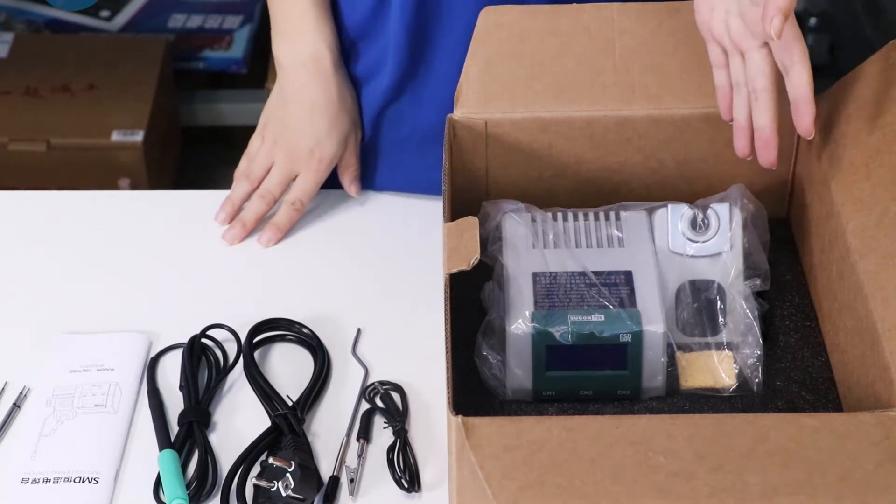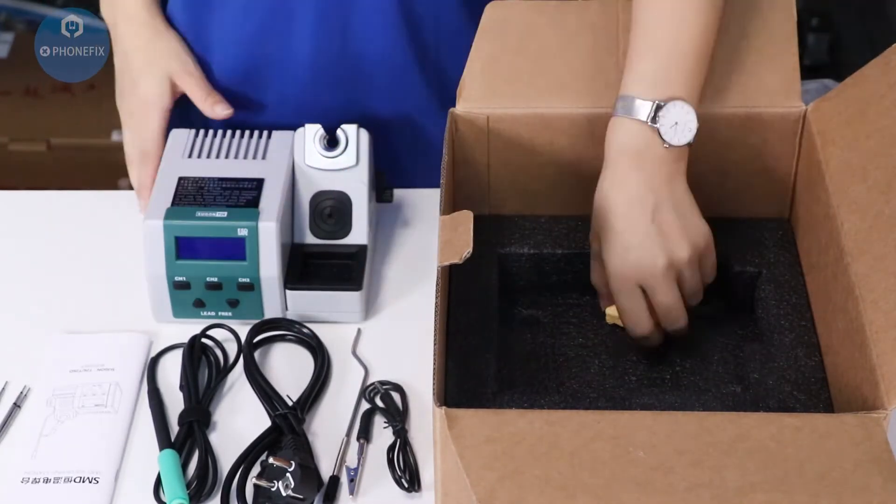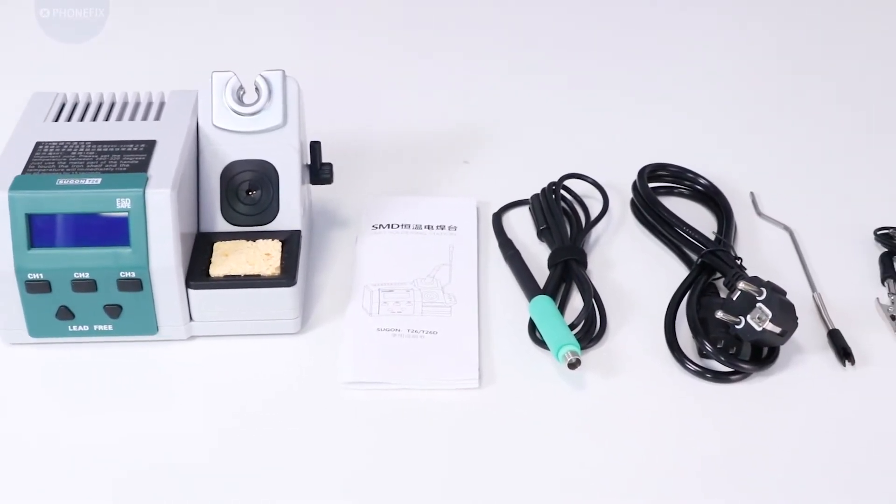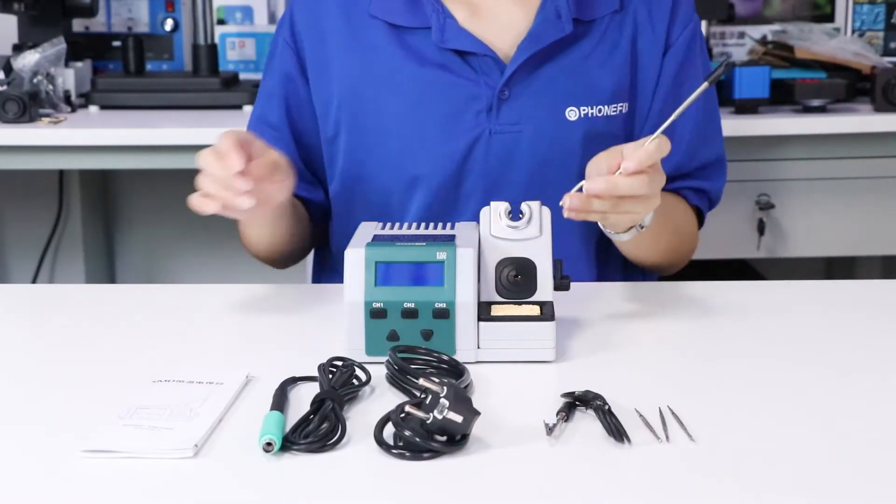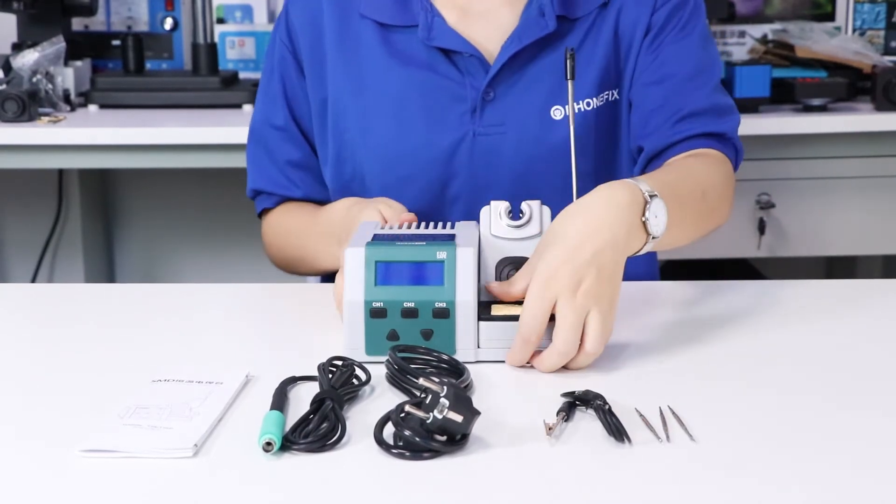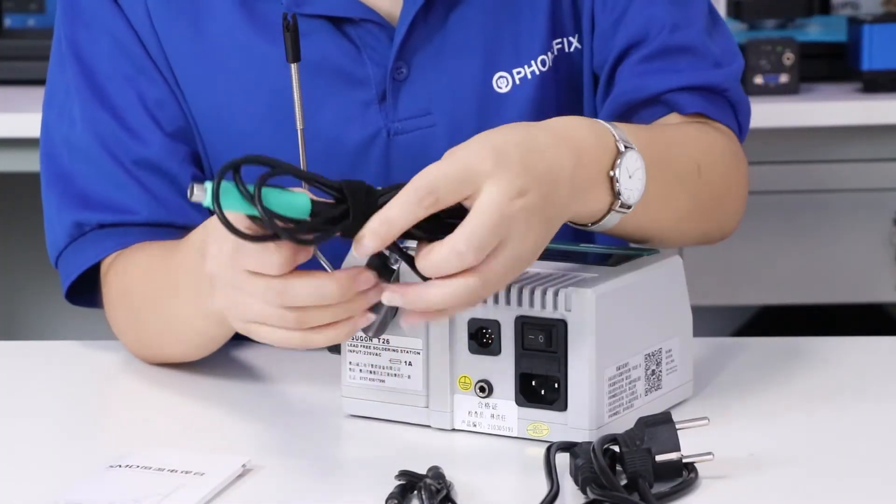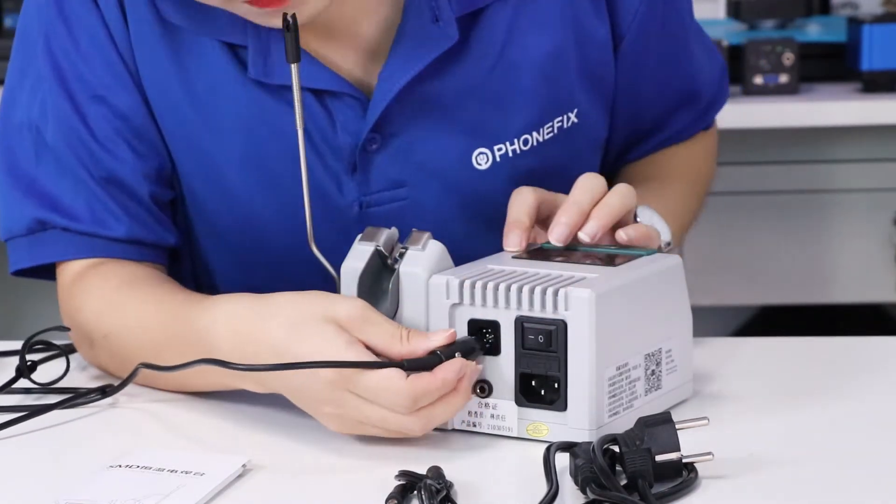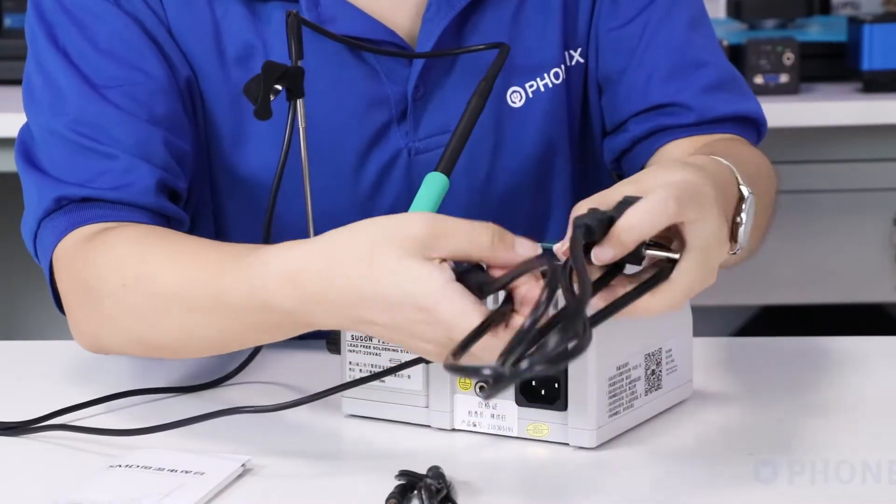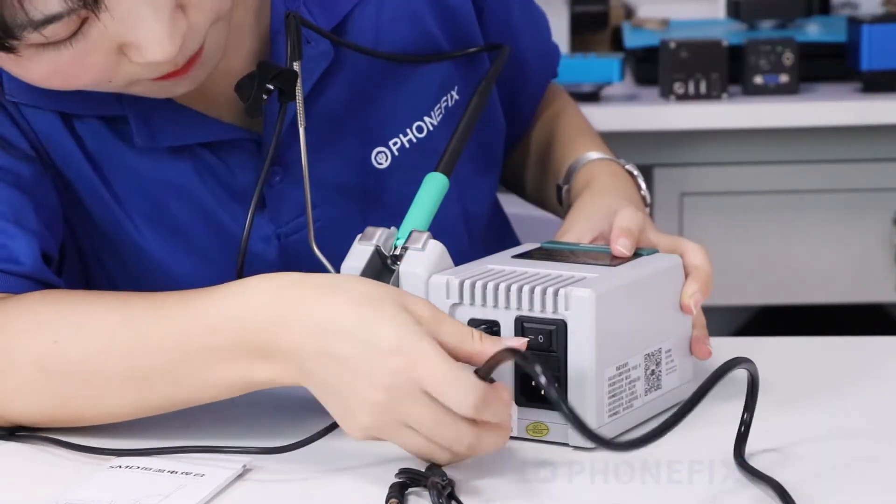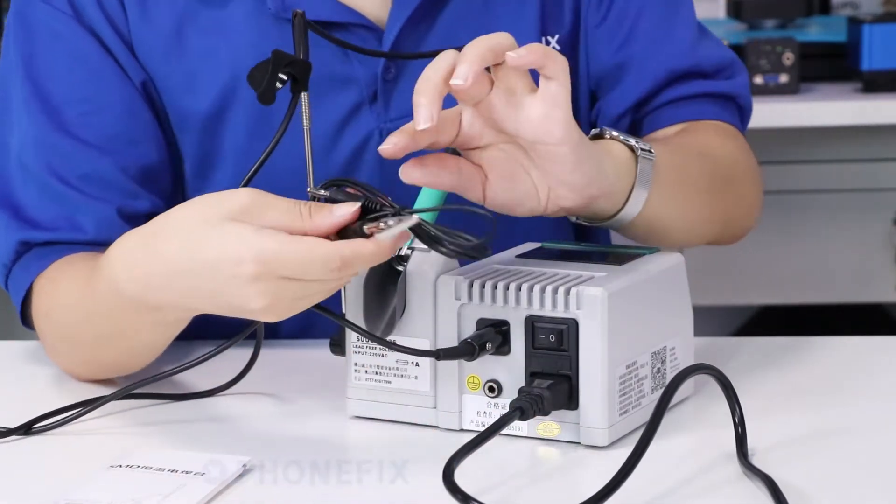The T26 soldering station. First, install the holder. Plug in the handle. Plug in the power supply. Last one, plug in the ground.